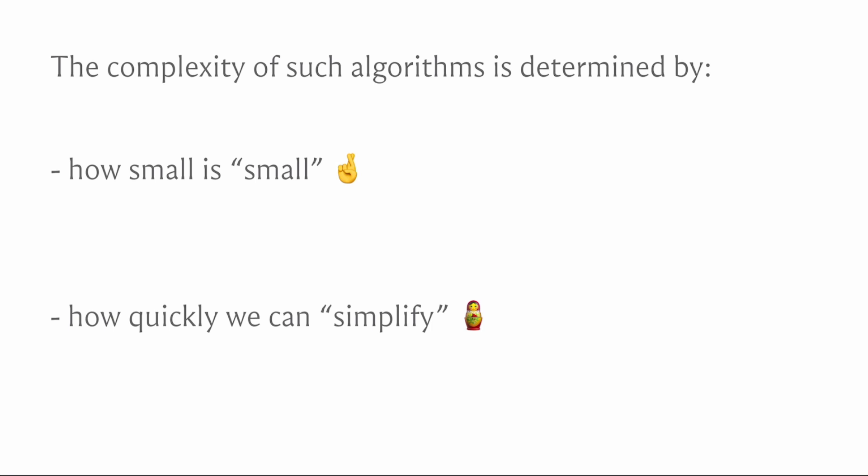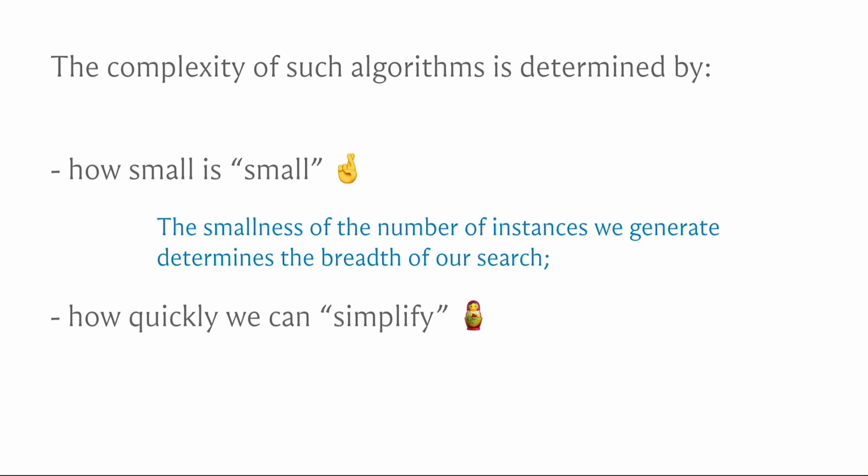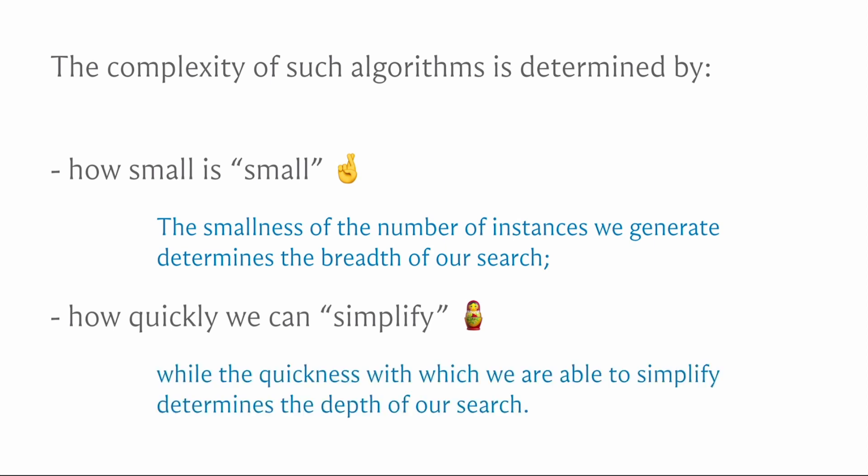If sub-problems are not getting simpler, you probably have a dangerous algorithm and should revisit what it's doing. The smallness of the number of instances generated at each step is the breadth of the search tree — how much you expand at each step. The rate at which you simplify instances to hit the base case is the depth. This will become more explicit as we work through examples and see a concrete search tree for the first time.